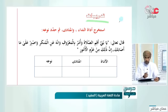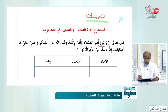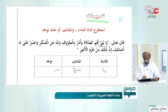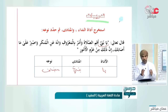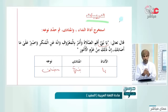استخرج أداة النداء والمنادى ثم حدد نوعه: قال تعالى: يا بني أقم الصلاة وأمر بالمعروف وانهَ عن المنكر. الأداة 'يا' والمنادى 'بني'. نوعه مضاف.